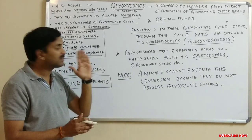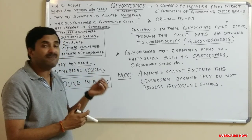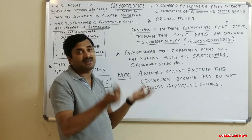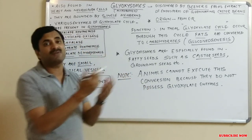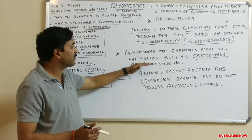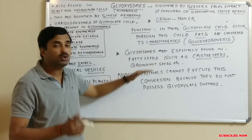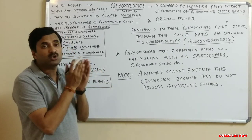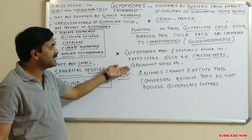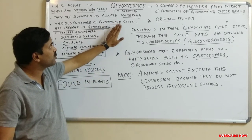Glyoxylate enzymes are found in plant cells, but especially in fatty seeds, because fatty seeds are full of fats and gluconeogenesis occurs in them to convert fats into carbohydrates. The best examples of fatty seeds are castor seeds and groundnut seeds, as both contain a very high amount of fatty acids.